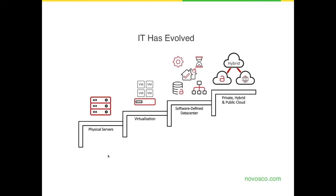Most recently we've had the introduction of public and private clouds. A lot of customers are now running VMware in what they call their own private cloud — their own data center cluster. We also have players like AWS and Microsoft with their Azure platforms as public cloud offerings. Workloads can be in the private cloud, in the public cloud running in Azure or AWS, or a mix of both, which is typically what customers are doing.